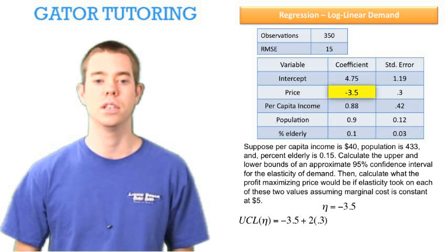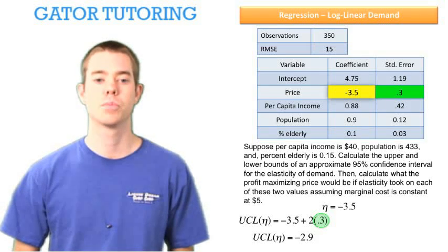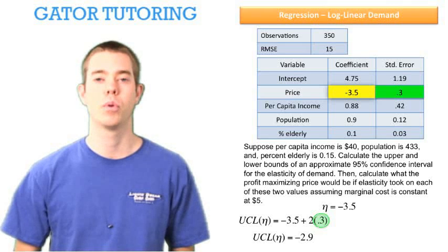This time we're doing elasticity, so we get that 0.3 out of the standard error from the price coefficient. We can do this algebra until the upper control limit is equal to negative 2.9.